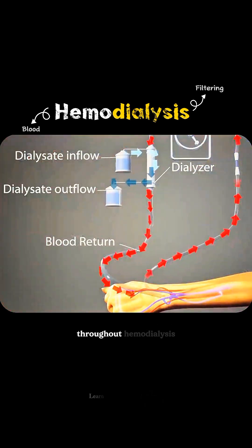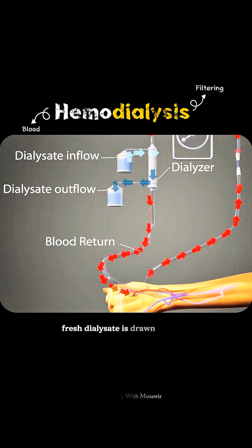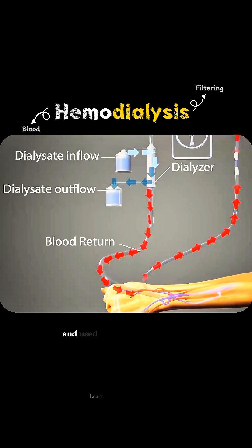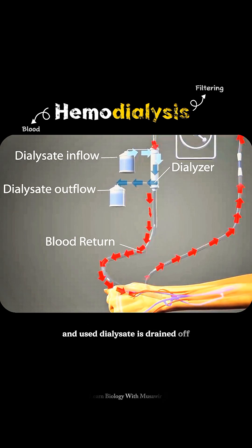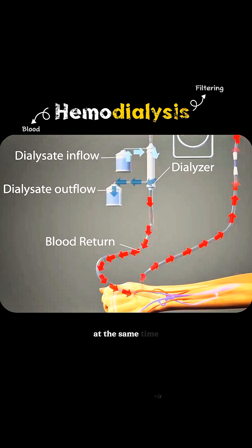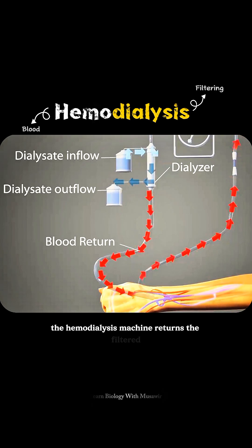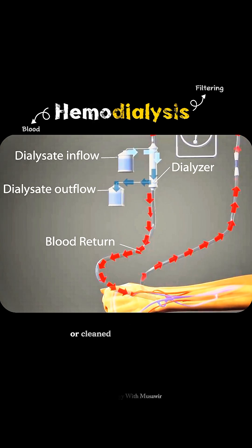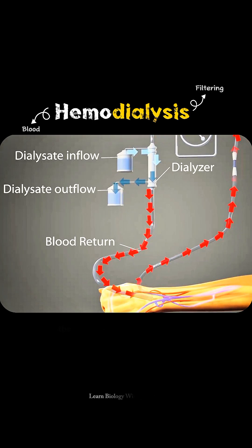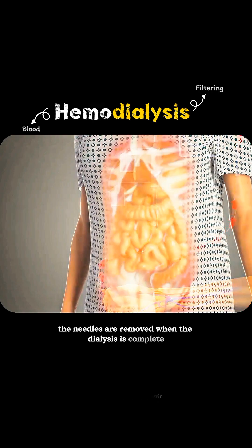Throughout hemodialysis, fresh dialysate is drawn into the dialyzer, and used dialysate is drained off. At the same time, the hemodialysis machine returns the filtered or cleaned blood to the body. The needles are removed when the dialysis is complete.